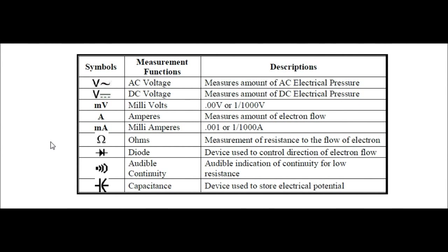Let's check out our symbols, measurement functions, and descriptions. We have nine of them here — some meters may have more, some may have less. V with the squiggly line represents AC voltage and measures the amount of AC electrical pressure. Number two: V with the bar and three dashes represents DC voltage and measures the amount of DC electrical pressure.